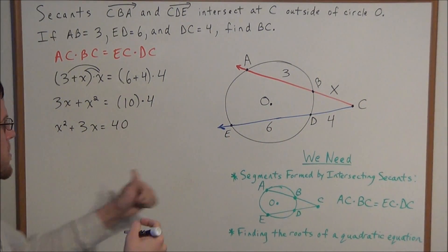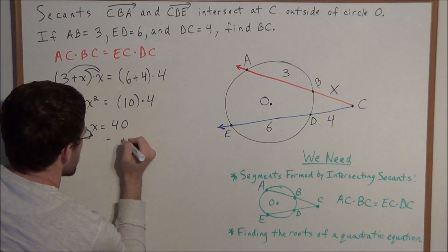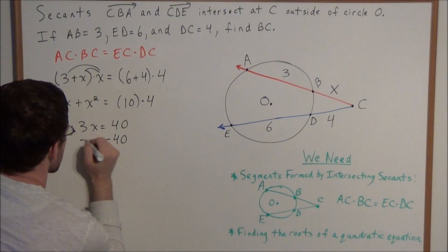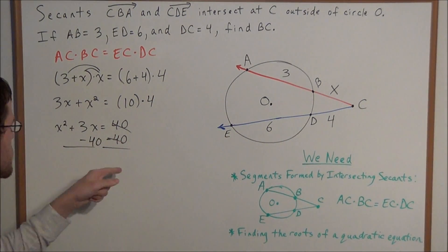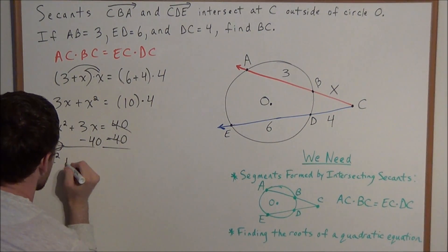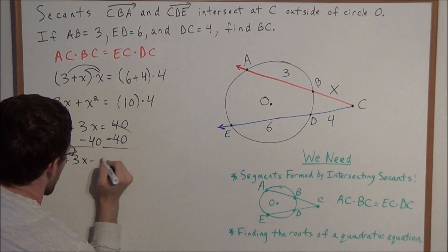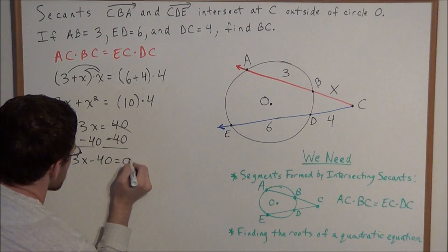Now we need to move everything to one side of the equal sign. Whenever we're working with an X squared term, we always want everything on one side. So 40 minus 40 cancels and we have X squared plus 3X minus 40 equals 0.